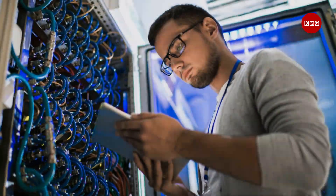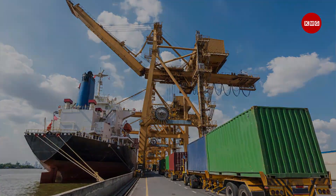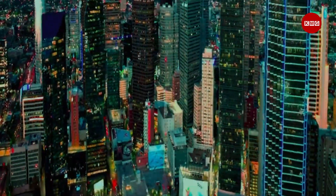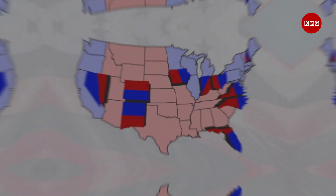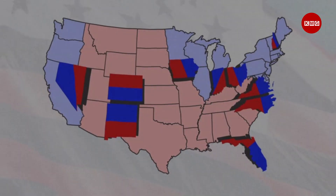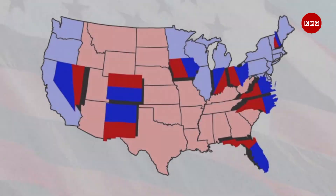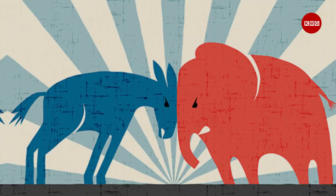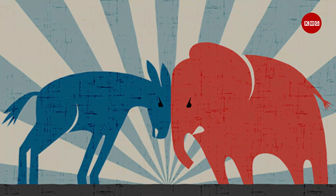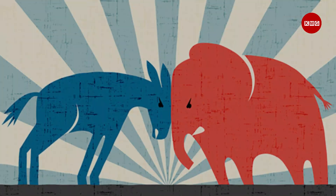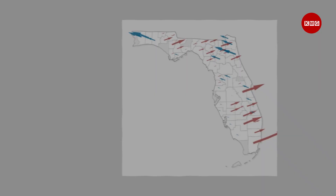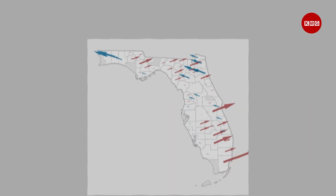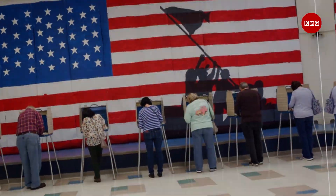technology, agriculture, and trade, which makes it more open to free markets and globalization. On the other hand, some states that are usually seen as swing states or battlegrounds are actually more ideologically polarized than we think. For example, Florida, which is often considered a toss-up state in presidential elections,